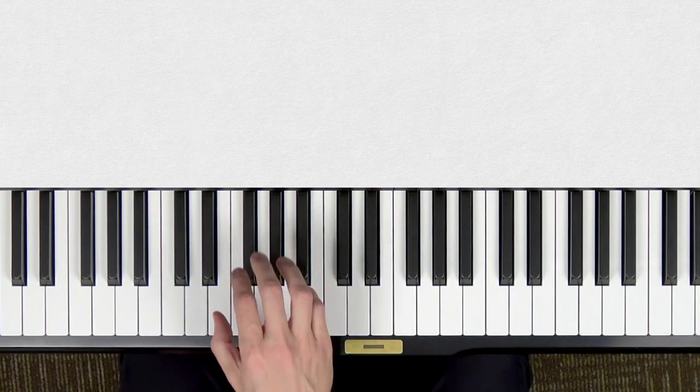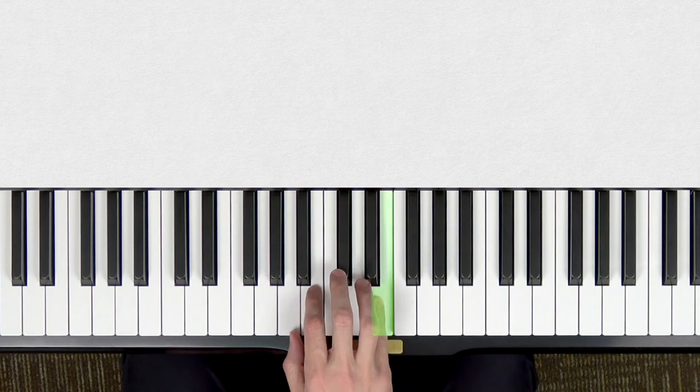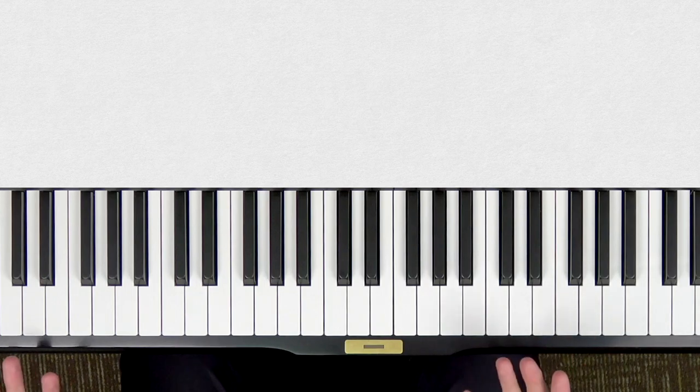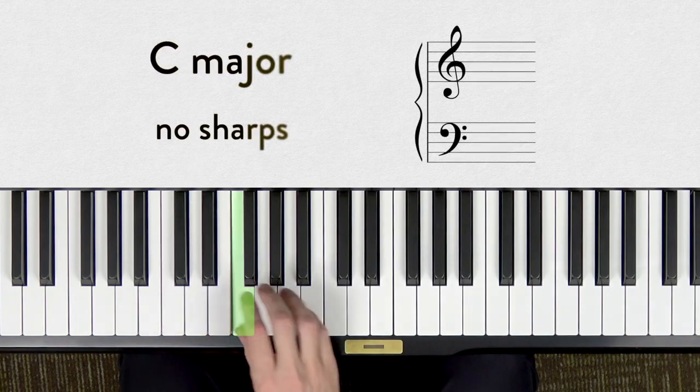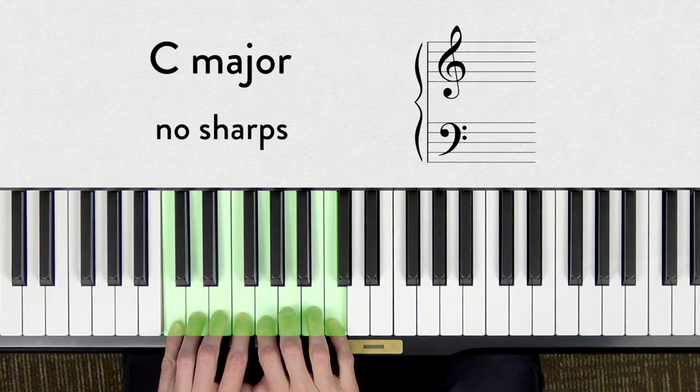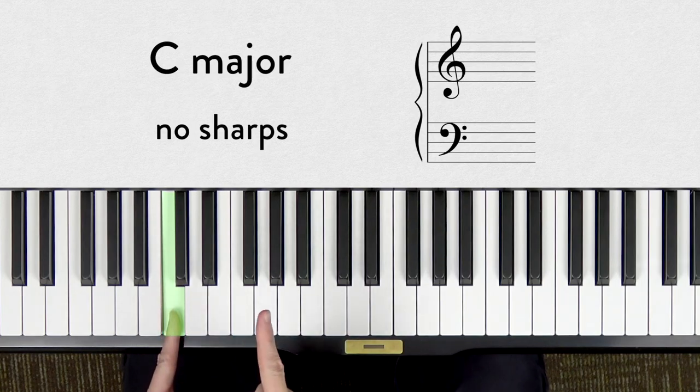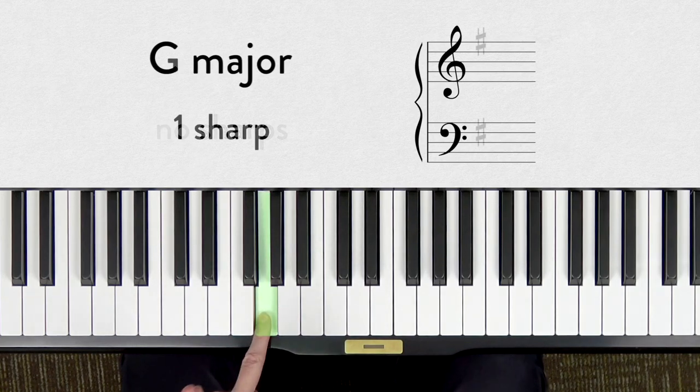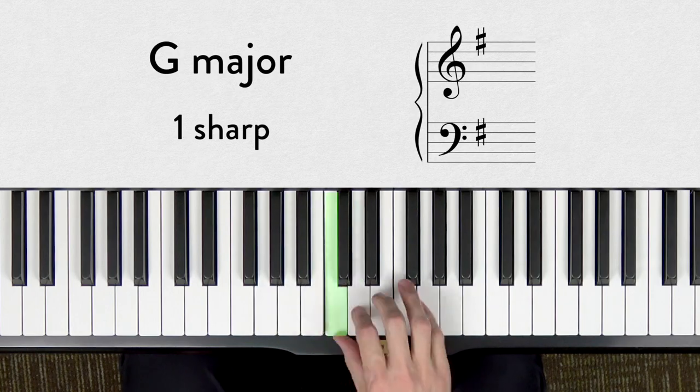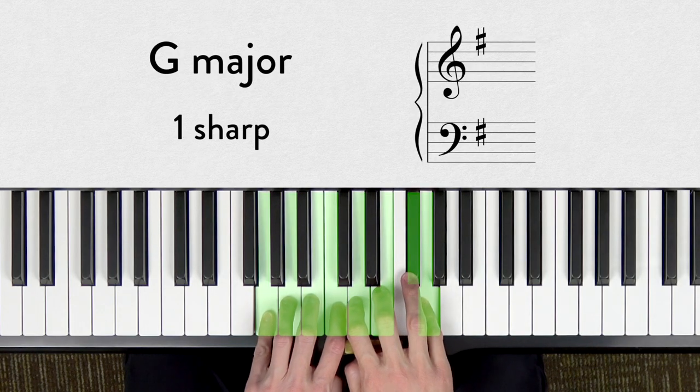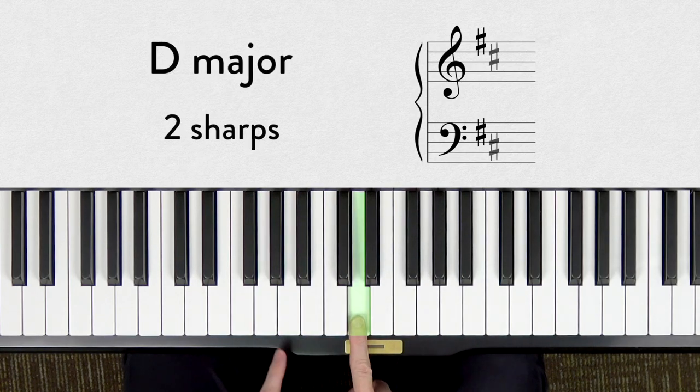Now, what if you happen to forget that E major has four sharps? Well, the easiest way to remember how many sharps in each key signature is your ladder of fifths. So, remembering that C major has zero sharps, just travel up by fifths. C up a fifth to G, every time you go up a fifth you add a sharp. G major has one sharp, go up another fifth.